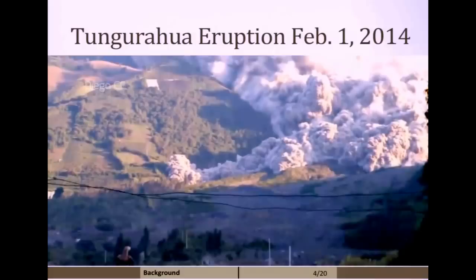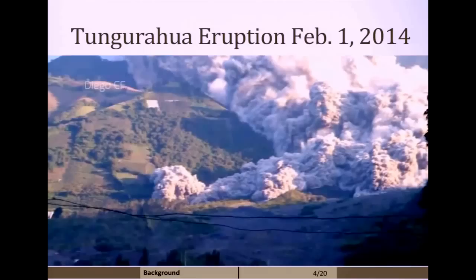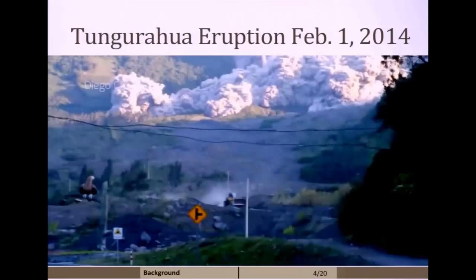These currents usually travel about, at this volcano, about 10 to 20 meters per second. We have those visual observations, but we don't have any way to measure the internal structure of these currents.